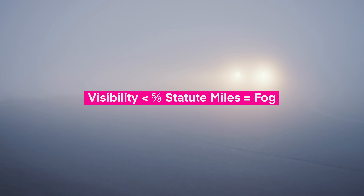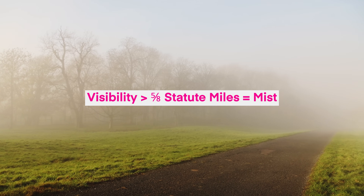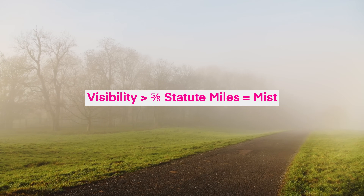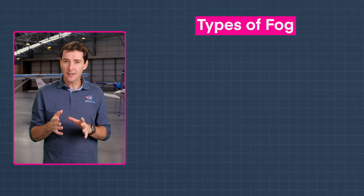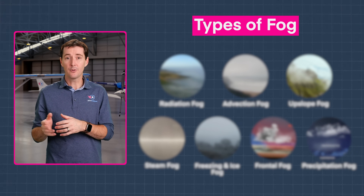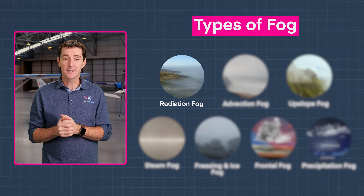What's the difference between other types of visibility restriction, like mist? If the visibility is less than 5.8 statute miles, then it's called fog. If the visibility is greater than 5.8 statute miles, then it's going to be called mist. We classify the different types of fog according to how they form, which brings us to the first type of fog — radiation fog.